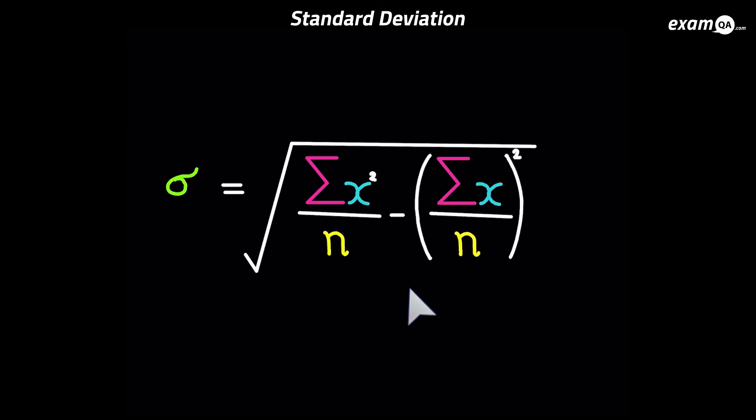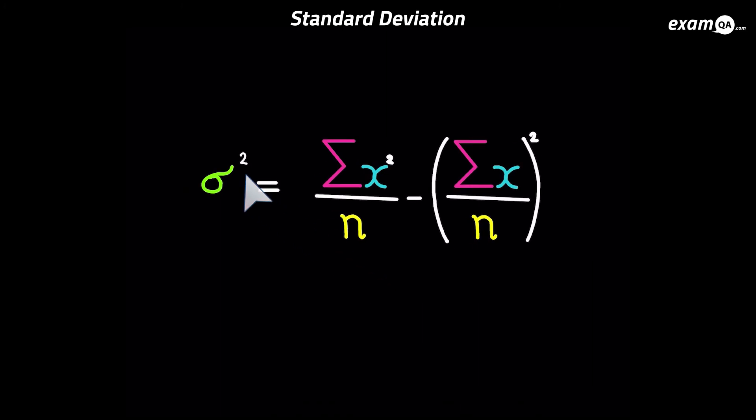So here's the original standard deviation formula. The one we use when it's not in the frequency table. Now there's one more thing I wanted to mention. Sometimes we talk about variance. Now variance is not much different to standard deviation. It's just a squared version of standard deviation. Basically the standard deviation without the square root. So squaring it. Of course the standard deviation sign gets a square on it. And the square root goes away. Now this is called the variance. So for the variance formula, just remember it's the standard deviation formula without the square root. And the standard deviation sign, it's got a square on it.